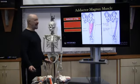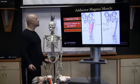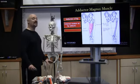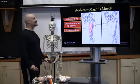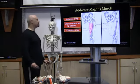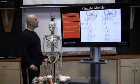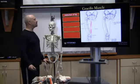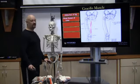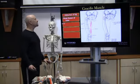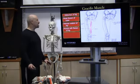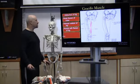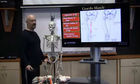The adductor magnus does adduction of the hip, external rotation as the hip adducts, and helps with extension of the hip. The gracilis does adduction of the hip, weak flexion of the knee, internal rotation of the hip, assists with flexion of the hip, and is a weak internal rotator of the knee.